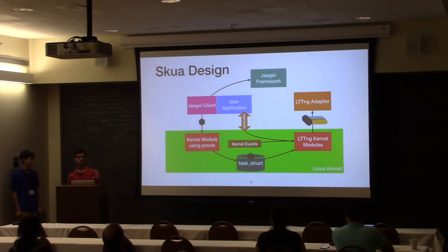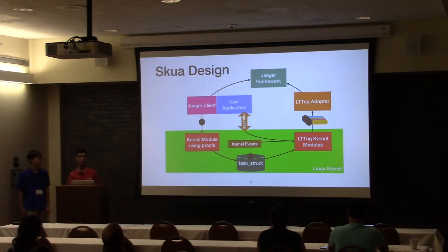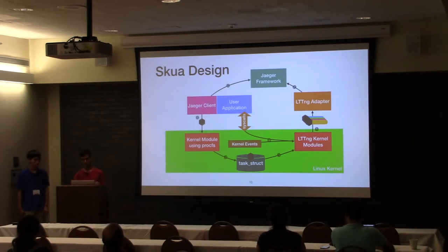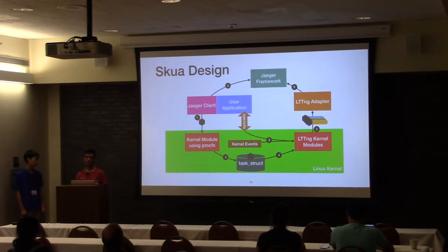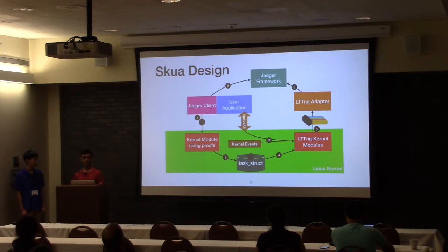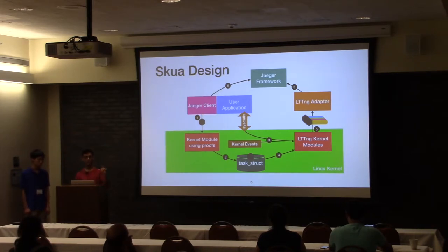What we did is combine the data from the task struct, which contains the context, and attach that to all of the syscalls and kernel events that LTTNG is generating as part of its kernel modules. We propagate that information back into user space using an LTTNG adapter that we built, and then report those into the Jaeger framework using the conventional methods of reporting different spans. So to recap: first the Jaeger client propagates its context into the kernel; then it stores that information in the task struct; when the user application generates syscalls or kernel events, LTTNG modules read the data out of the task struct, pair that information with the events generated, and then those events are propagated back up into user space through the LTTNG adapter, and both the Jaeger client and our adapter report to the Jaeger framework.